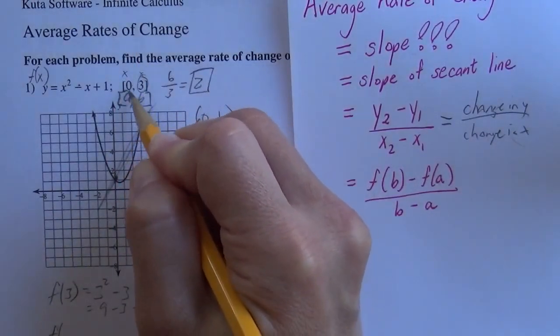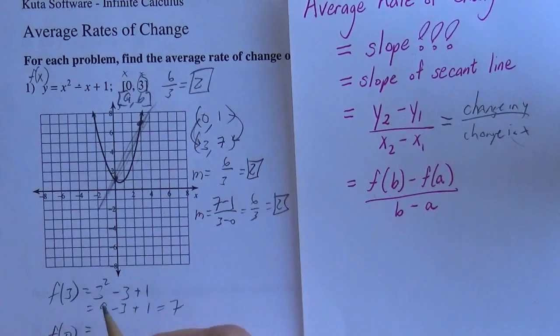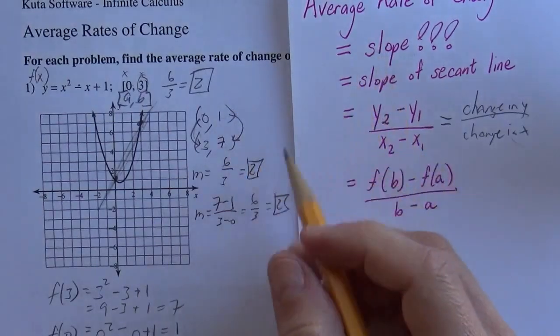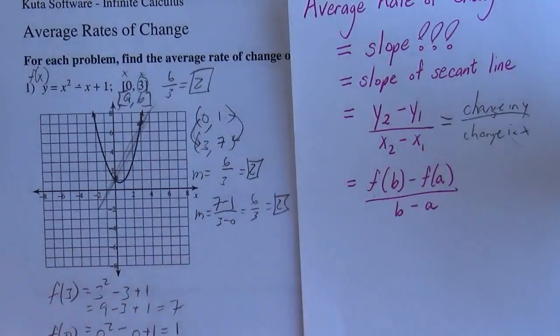So a is 0. So this is 0 squared minus 0 plus 1 is 1, just like we knew it would be. So these are f of b minus f of a over b minus a becomes that.